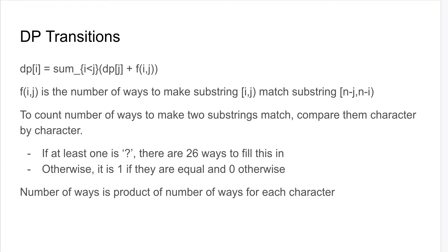Basically think about it as adding one word to the katek at a time. In this case, dp[i], you fix the start point of the word and then you say where you want the word to end. f(i,j) is one way to denote the number of ways to make substring i to j match substring n-j to n-i. To count the number of ways two substrings match, you compare them character by character, and if one of them is a question mark, there's 26 ways to fill in this character. Otherwise it's one if they're equal and zero otherwise, and the number of ways is the product for each character.